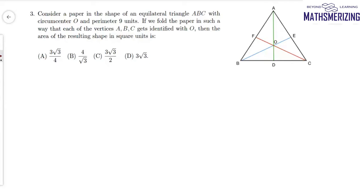Question number three: consider a paper in the shape of an equilateral triangle ABC with circumcenter O and perimeter 9 units, so the length of each side is simply 3 units. If we fold the paper such that each of the vertices A, B, and C gets identified with O, then find the area of the resulting shape in square units.